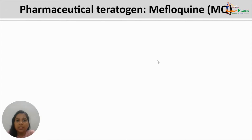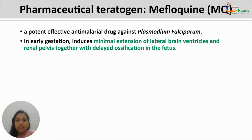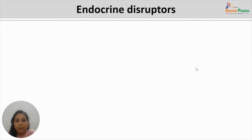The next pharmaceutical teratogen is mefloquine, generally used as a potent anti-malarial drug effective against Plasmodium falciparum. In early gestation, exposure may induce minimal extension of the lateral brain ventricles and renal pelvis together, and some delayed ossification, that is bone formation. However, it is considered safe during the second and third trimester. Prenatal exposure in early pregnancy is considered lethal rather than teratogenic to the embryo.